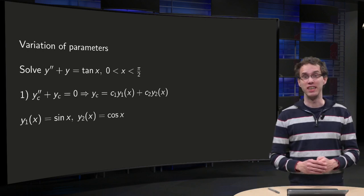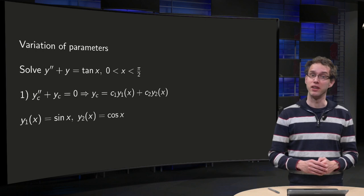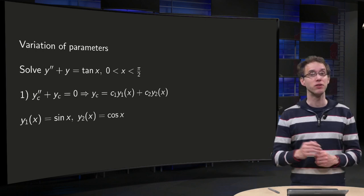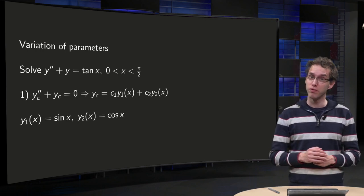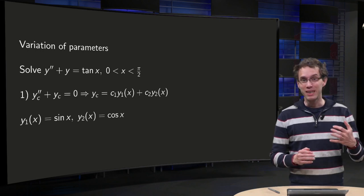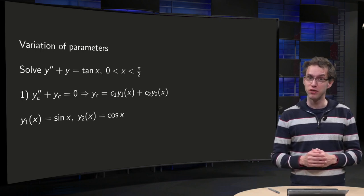If we have a tangent function in the right hand side of our second order linear differential equation, we cannot use the method of undetermined coefficients anymore. We can use variation of parameters though, as you will see in this video.